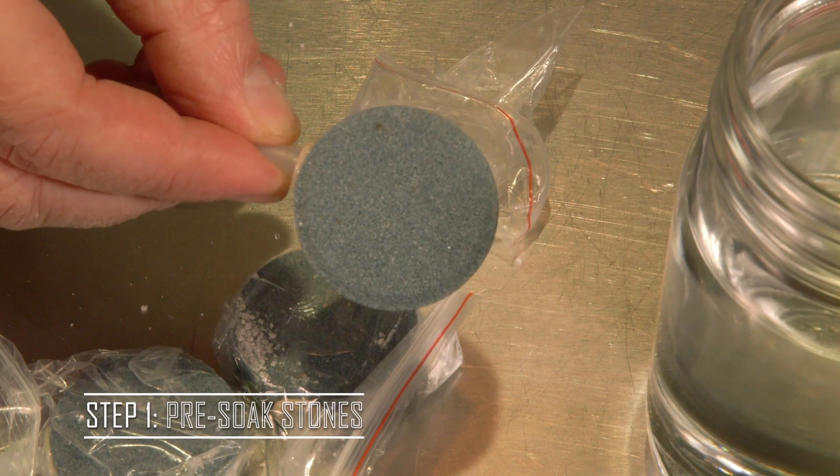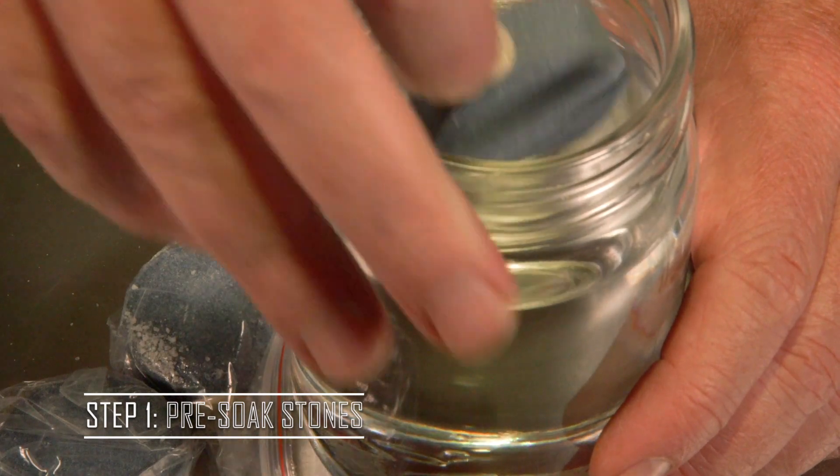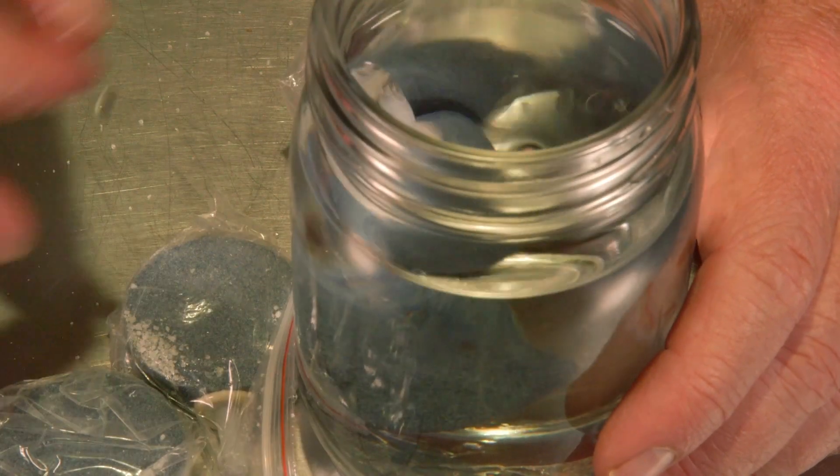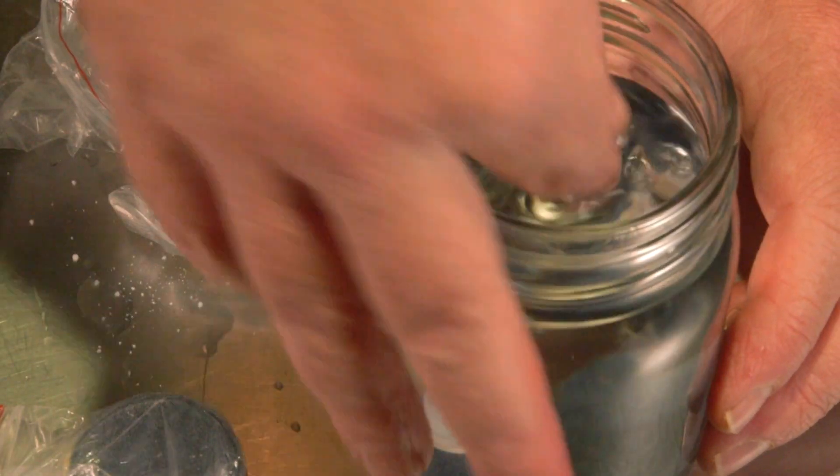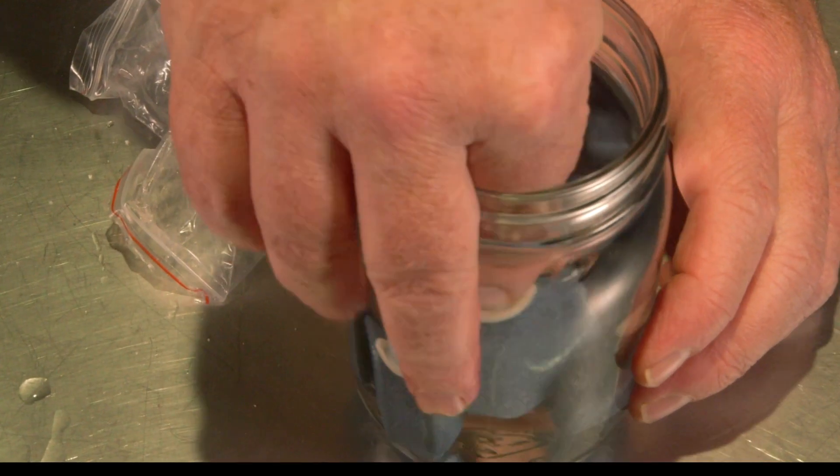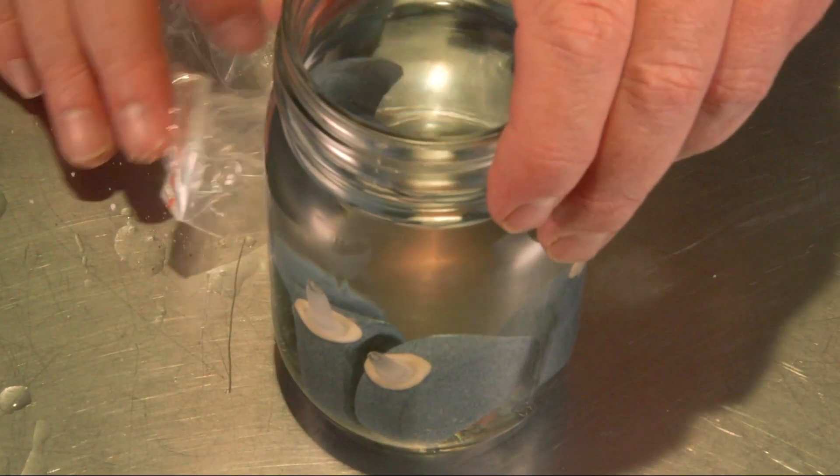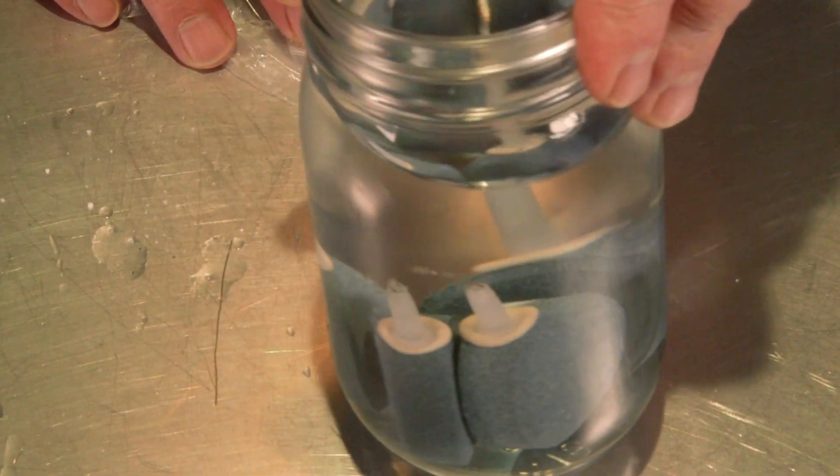Now we're going to begin building our system, and the first thing you want to do if you're using these graphite air stones, go ahead and soak those in water for about 30 minutes. That's going to help them sink to the bottom, and it's recommended on the package to do that before you use these air stones. So I'm just doing that first so that I can go ahead and begin the project, and by the time I'm done with the project, those air stones will be ready to use.